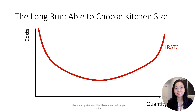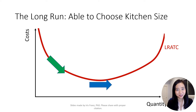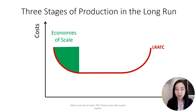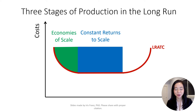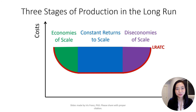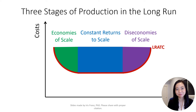Also notice that the long-run average total cost first drops, then remains constant, but will eventually rise. We call these three stages of LRATC: economies of scale, constant returns to scale, and diseconomies of scale. In the next clip, I will talk about why a firm goes through these three stages. I hope this helps, and I'll see you next time.